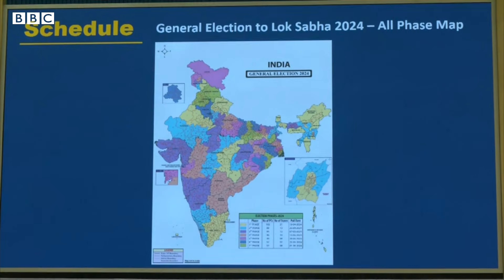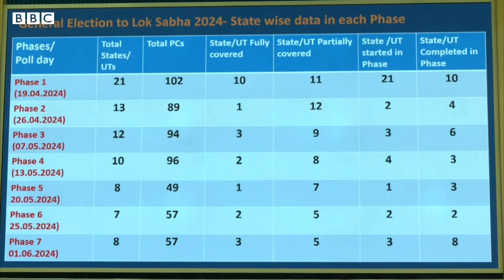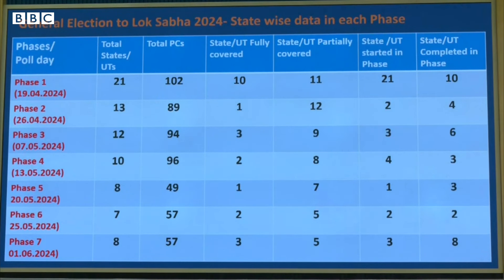We will share this map with you so that you can keep it for reference — it is a good snapshot. In this: Phase 1 has 102 constituencies, Phase 2 has 89, Phase 3 has 94, Phase 4 has 96, followed by 49, 57, and 57 constituencies respectively.